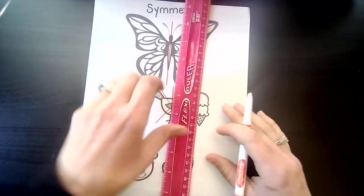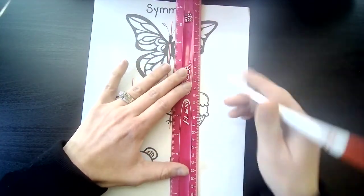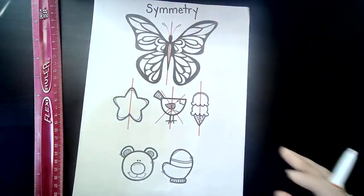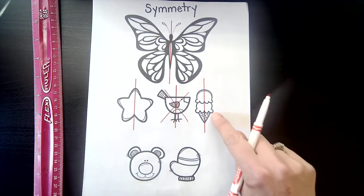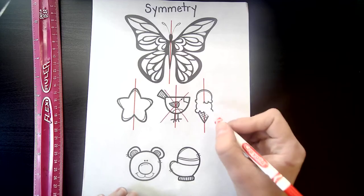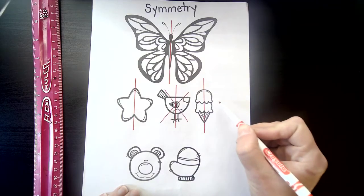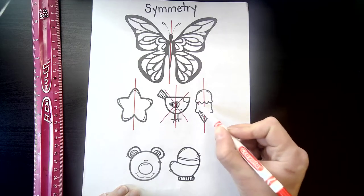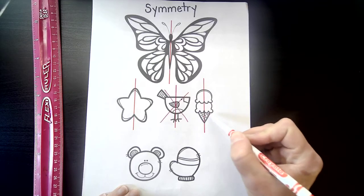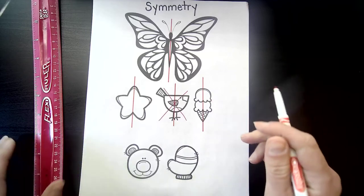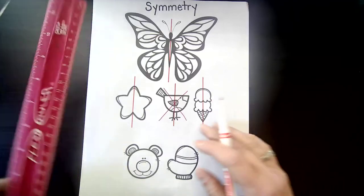Let's look at this ice cream cone. What do you think — does the ice cream cone have symmetry? Yes, it does. Everything that's on this side is mirrored on the other side. Mirrored means it looks the exact same, kind of like your reflection when you look in the mirror. All right, let's try this bear.